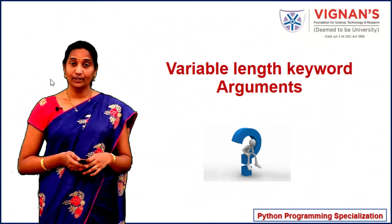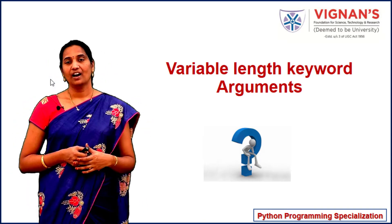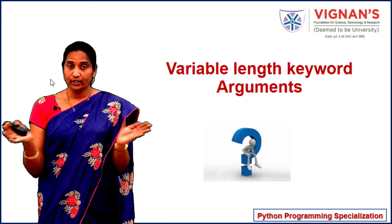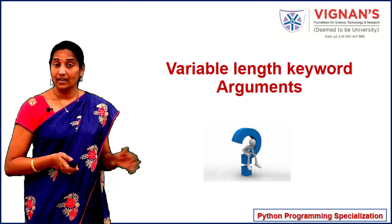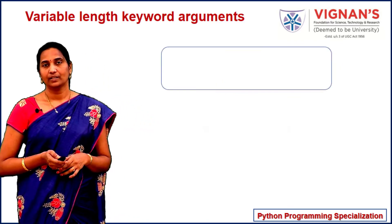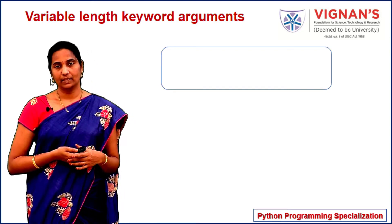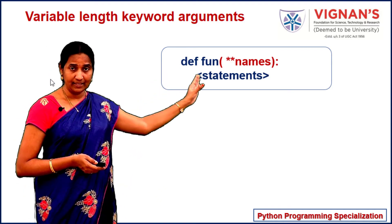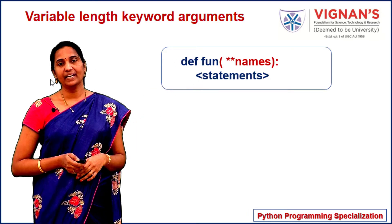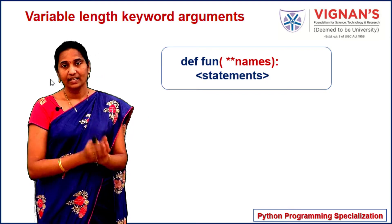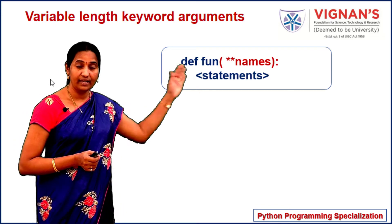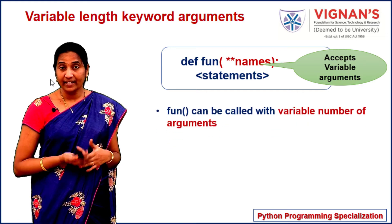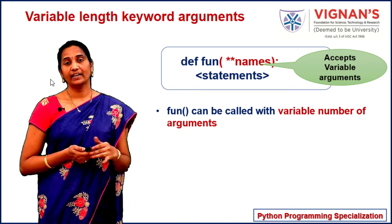Now let's see how we can use variable length keyword arguments in Python. With variable length positional arguments, all arguments are packed together as a tuple and copied to the parameter. But with variable length keyword arguments, the parameter is treated as a dictionary. Consider this function definition where fun has a parameter names prepended with two asterisk symbols, indicating it is a variable length keyword argument parameter.